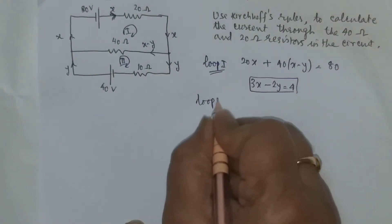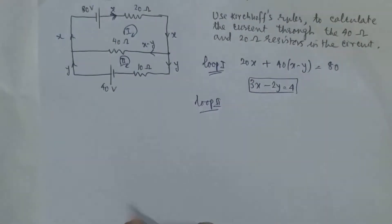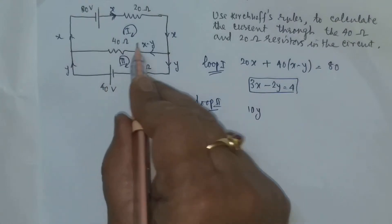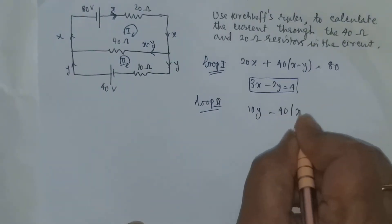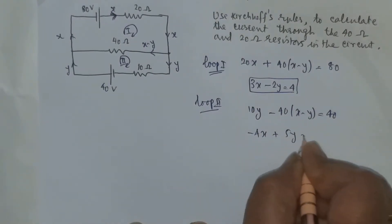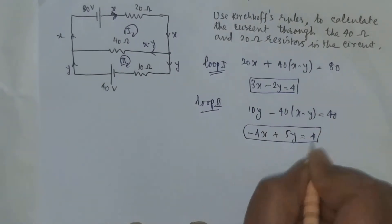In loop two, again I use Kirchhoff's rules. This is 10y. Again it will be negative: minus 40 into (x minus y). This is 40. So we have minus 4x plus 5y is equal to 4.